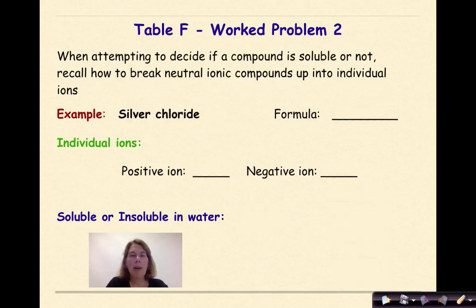Let's look at another problem. Silver chloride. All right, silver chloride. So, my positive ion is going to be Ag+1, because I can look that up on my reference table. My negative ion is going to be Cl-1. Therefore, if I put Ag+1 and Cl-1 together, my formula is AgCl. And again, I need to go figure out, is this soluble or insoluble?